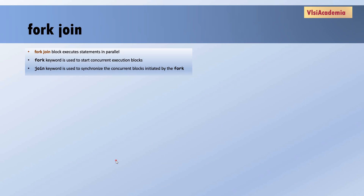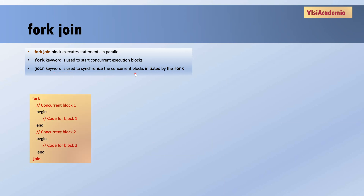Now let's move to fork-join. In SystemVerilog, the fork and join constructs are used to create concurrent or parallel blocks of code that can be run parallelly in a simulation. The fork keyword starts execution of these concurrent blocks, and at the end the join keyword is used to synchronize these concurrent blocks initiated by the fork.